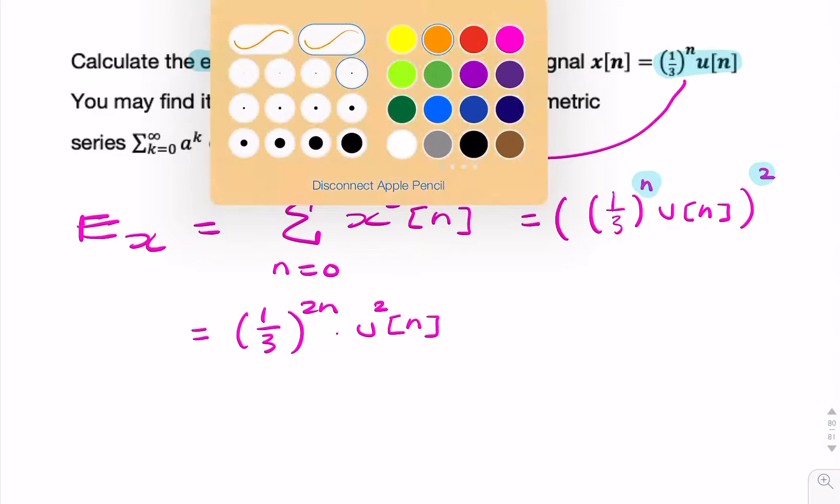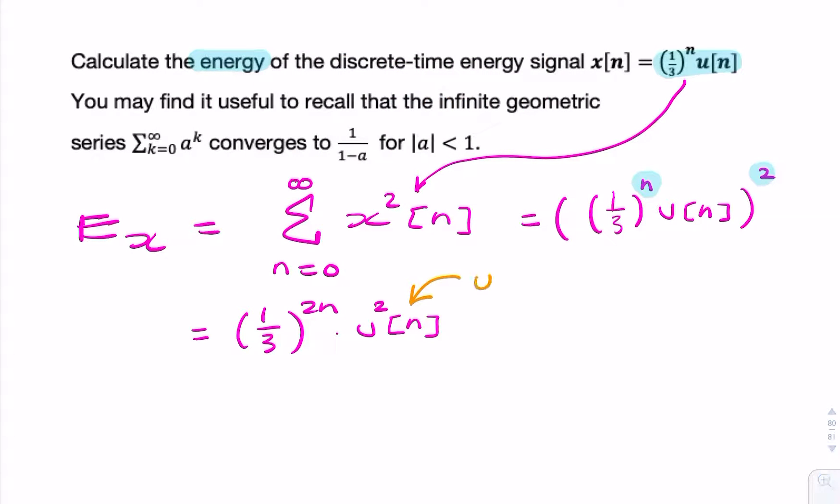But we know that a unit step, if you square it, you still get a unit step, because a unit step is just 1. I drew the continuous version here. If you were to draw a discrete-time version, it would be the same. You'd have values of 1, which when squared are still 1. So the unit step squared is the same as the unit step.